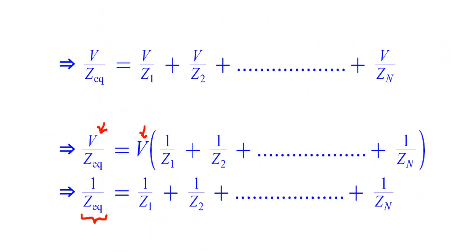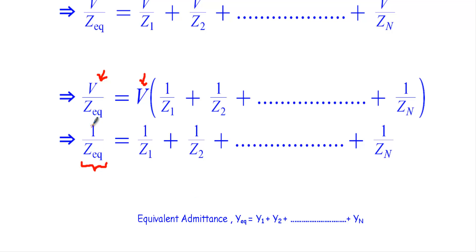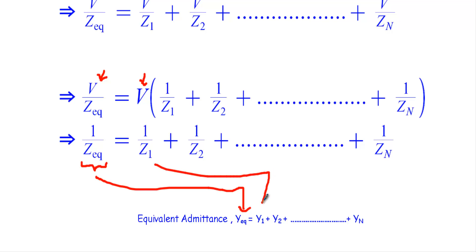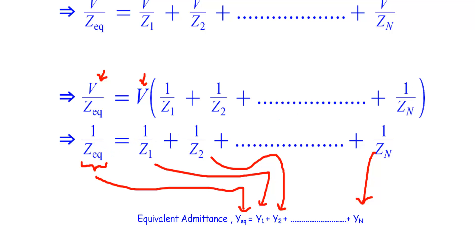Since the reciprocal of impedance is admittance, 1 / Z equivalent = Y equivalent, 1 / Z1 = Y1, 1 / Z2 = Y2, and 1 / Zn = Yn. This is how we calculate the equivalent impedance, or replace several parallel impedances with a single equivalent: 1 / Z equivalent = 1 / Z1 + 1 / Z2 + ... + 1 / Zn.